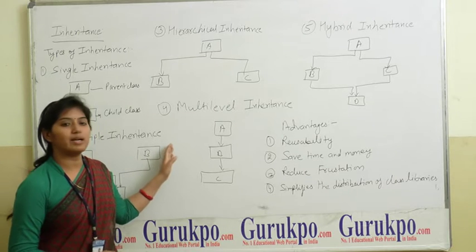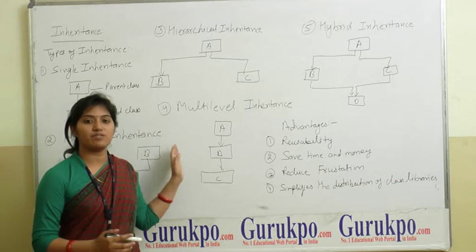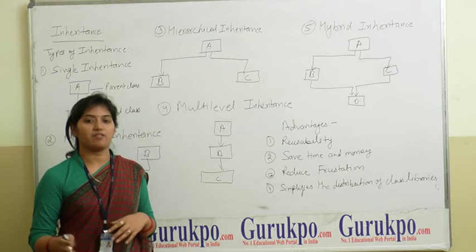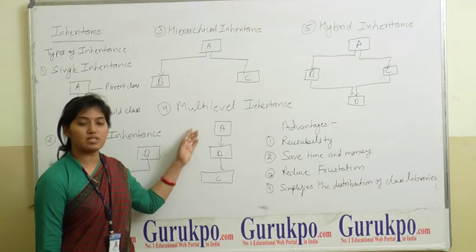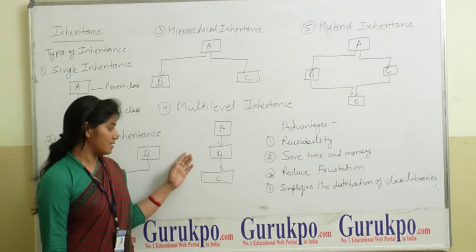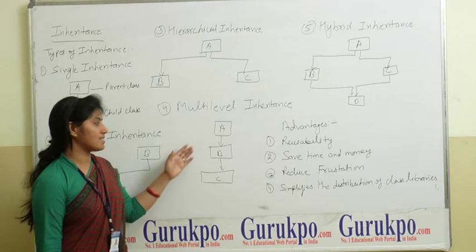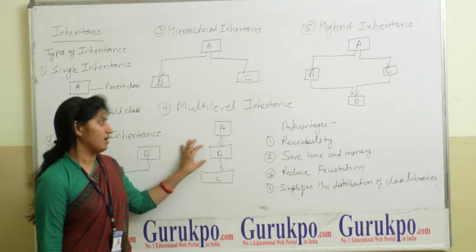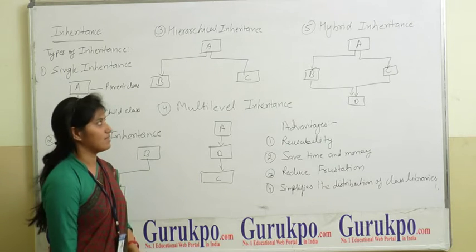The fourth type is multi-level inheritance. In multi-level inheritance, we have multiple levels from which the object properties are acquired. First, A is acquired by B — that means B acquires the properties of A. Then C acquires the properties of class B, so C is a child class and B is a parent class. In multi-level inheritance, for B, A is the parent class, and for C, both A and B are parent classes.